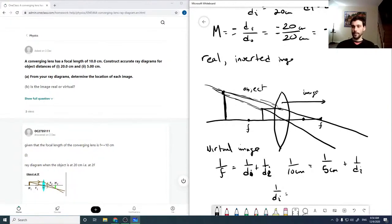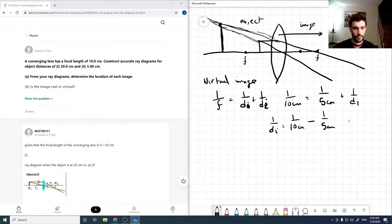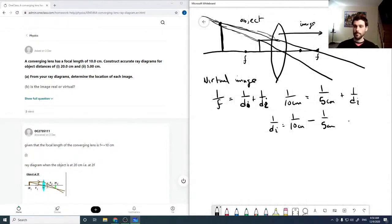So 1 over DI is 1 over 10 minus 1 over 5. Giving them the same denominators here. So 1 over DI is 1 over 10 minus 1 over 5, which is equal to 1 over 10 minus 2 over 10 minus 1 over 10. So apparently they should have converged at the focal point. So I must have just been trying to force it. So I guess it would be here. So DI is minus 10 centimeters.